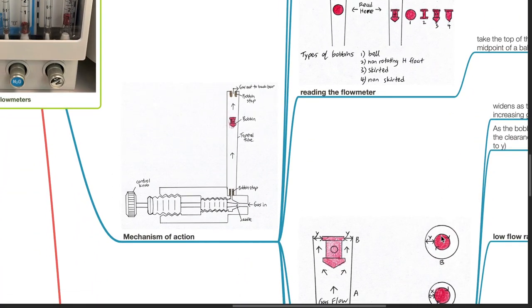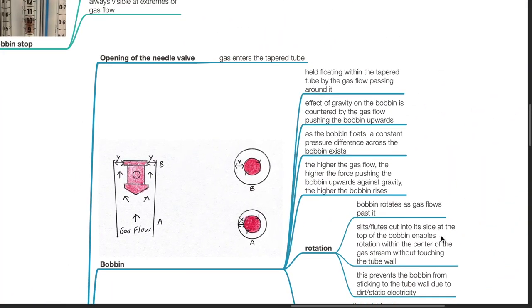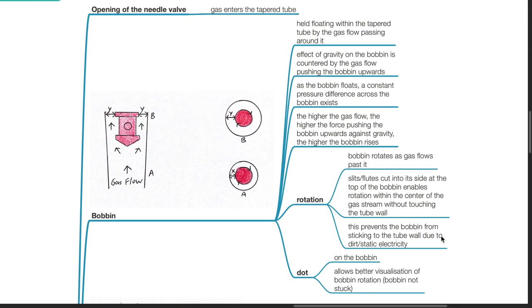Mechanism of action: Opening of the needle valve results in gas entering the tapered tube. The bobbin is held floating within the tapered tube by the gas flow passing around it. The effect of gravity on the bobbin is countered by the gas flow pushing the bobbin upwards as the bobbin floats, a constant pressure difference across the bobbin axis. The higher the gas flow, the higher the force pushing the bobbin upwards against gravity and the higher the bobbin rises.